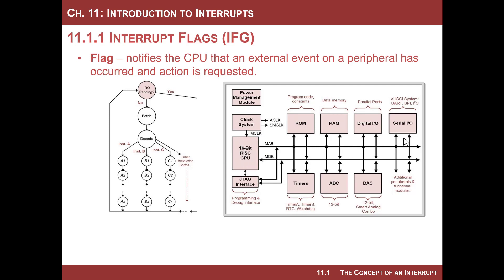You set this up so that if something happens out there, the peripheral raises a flag. Then, after every instruction is executed, the CPU takes a quick check to see if anybody has raised a flag, and then continues. Looking at the fetch, decode, execute state machine, after each instruction is executed it just takes a quick peek and says, 'Anybody out there raise a flag?' If no, it continues executing.